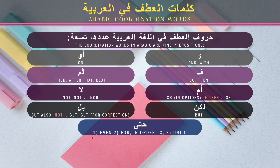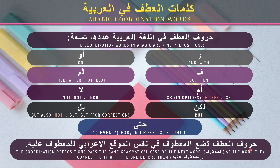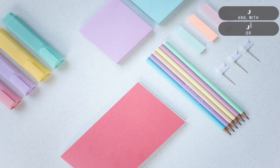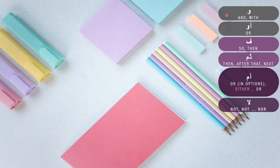I want you to note that حروف العطف, the coordination prepositions, require the following word — called المعطوف — to have the same grammatical case as the word it connects to, which is called المعطوف عليه. The المعطوف is usually a noun or a pronoun.